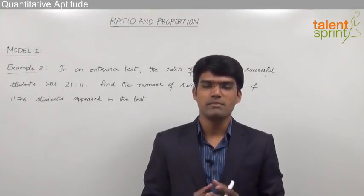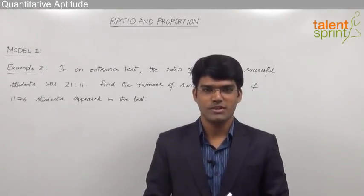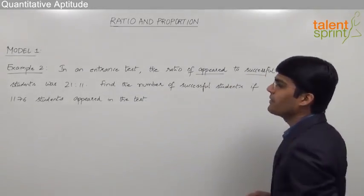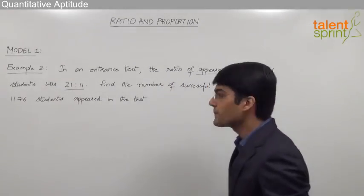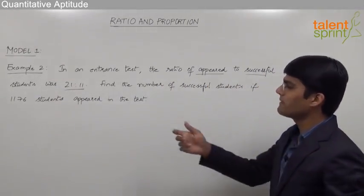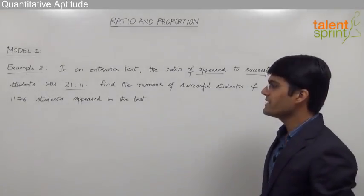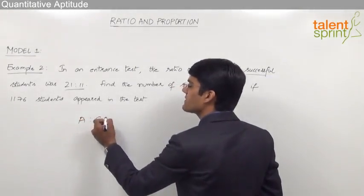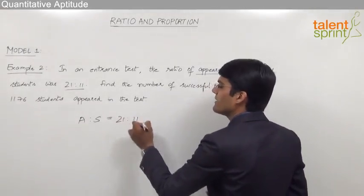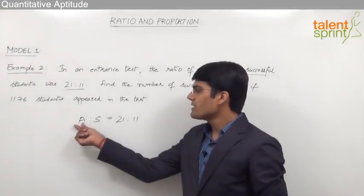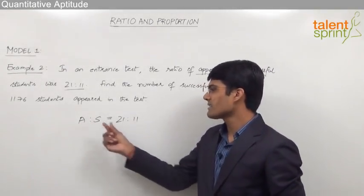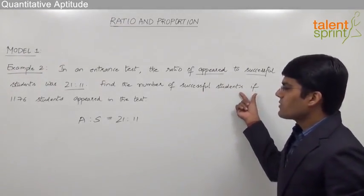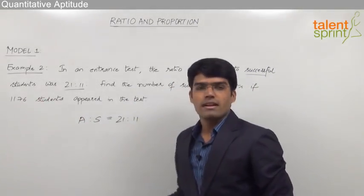Let us now take the second example based on model 1, which is the concept of ratio. The question is: in an entrance test, the ratio of appeared to successful students was 21 is to 11. Find the number of successful students if 1176 students appeared in the test. So the ratio of appeared students to successful students is 21:11, meaning if appeared students are 21 parts, successful students are 11 parts.